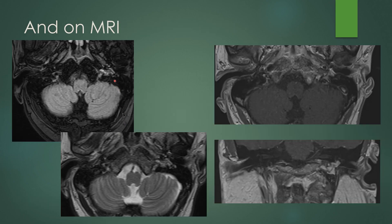On MRI, you see abnormal hyperintense FLAIR signal in the area of the middle ear and mastoid at the level of the jugular bulb on the left side. On the T2-weighted image it looks like a permeative process of bright signal, and when you give contrast the mass enhances. Here's the middle ear component extending down to the jugular bulb, shown on coronal compared to the normal side where you see no enhancement.